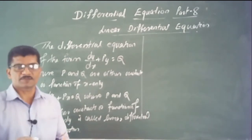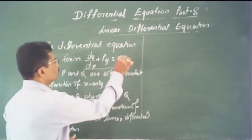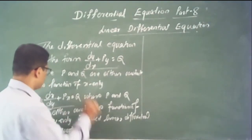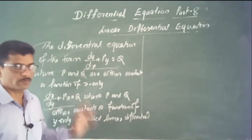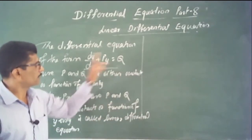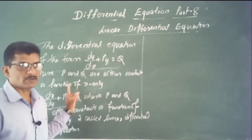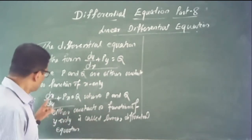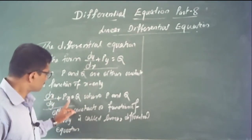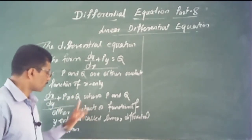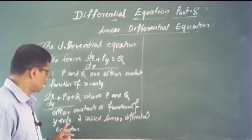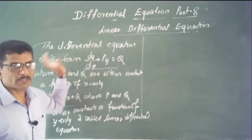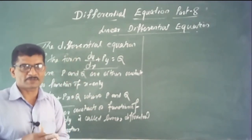The differential equations of the forms dy/dx + P·y = Q, or dx/dy + P·x = Q. In the first case, P and Q are either constants or functions of x only. In the second case, P and Q are either constants or functions of y only. This form of equation is said to be a linear differential equation.